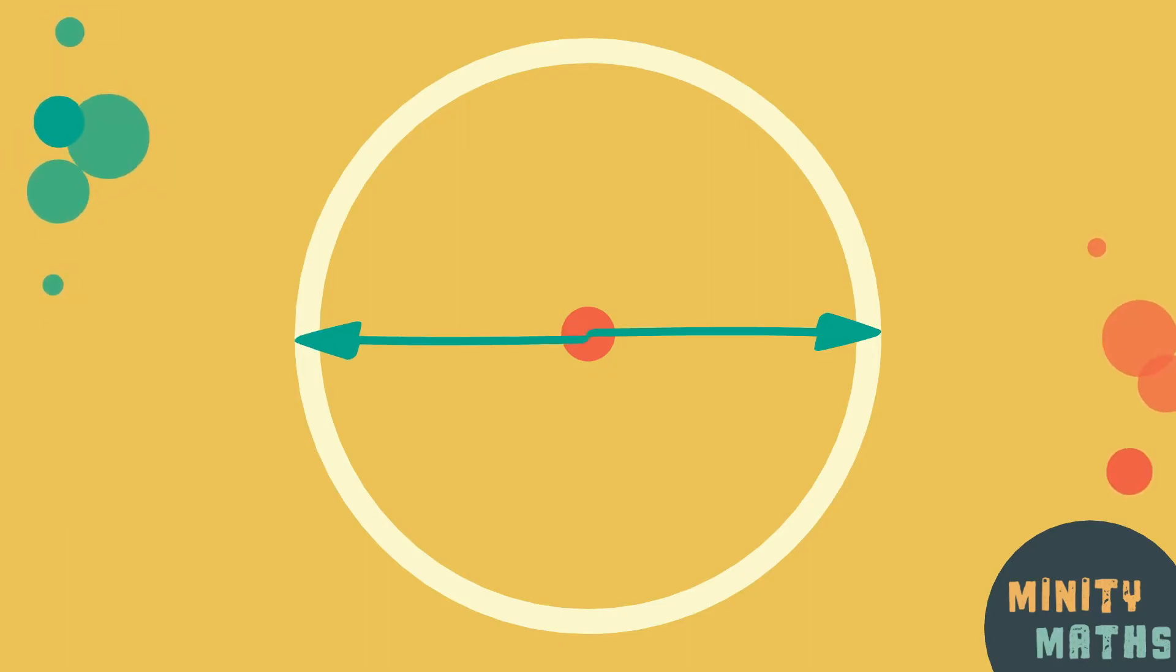The radius is the distance from the centre to the edge of the circle. This is half of the diameter.